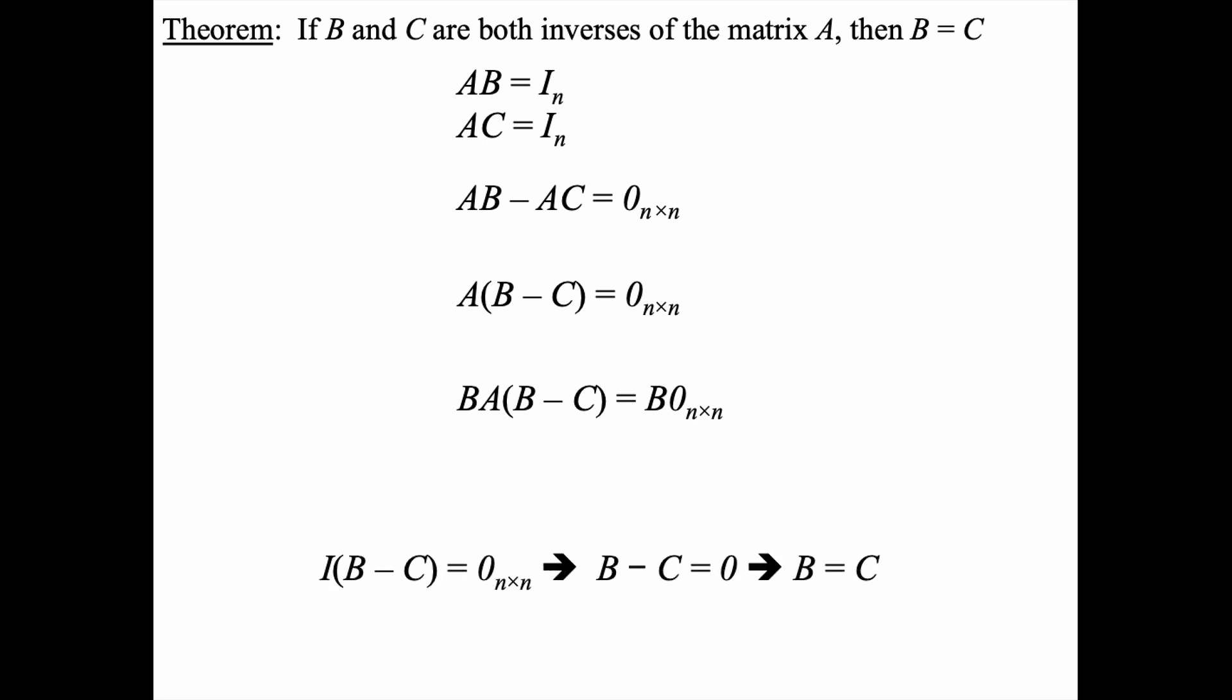So now we've established that B minus C matrix equals the zero matrix and once again B equals C. So any way you slice or dice it, if B and C are both inverses of matrix A, well B and C are actually the same. And that's another way of saying that the inverse of a non-singular matrix is unique. Hope you enjoyed this video.